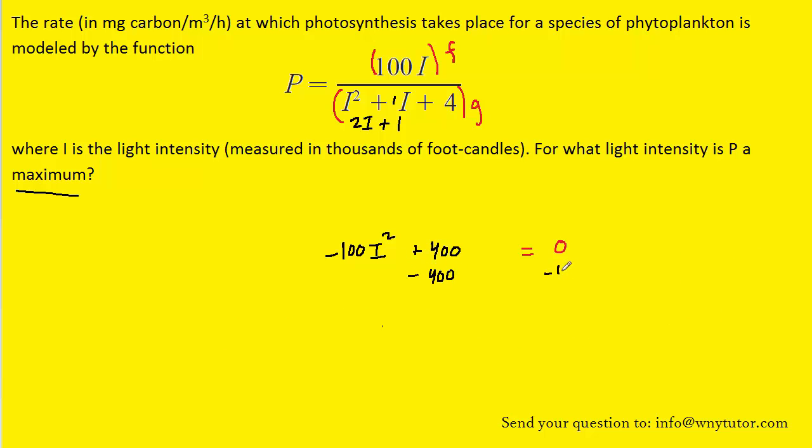To solve for I, we can subtract 400 from both sides of the equation. We'll then divide both sides by negative 100, and then finally take the square root of both sides, and that's going to allow us to see that I is equal to 2.